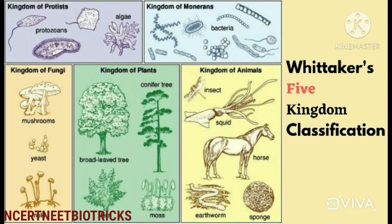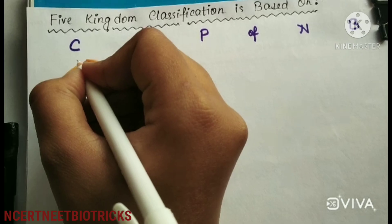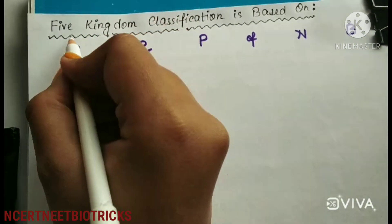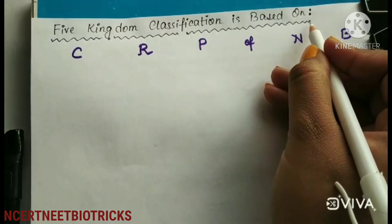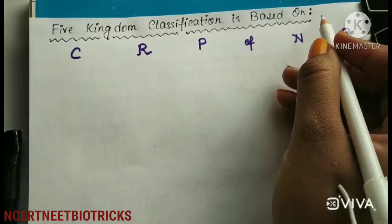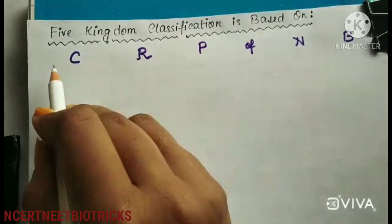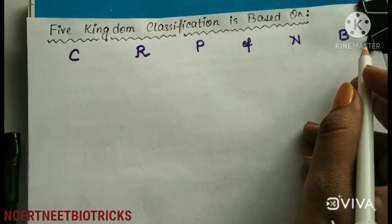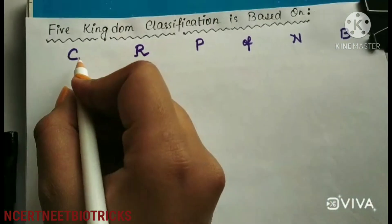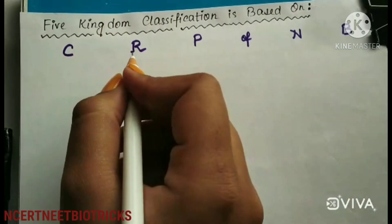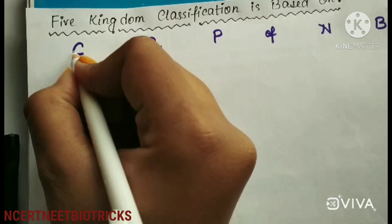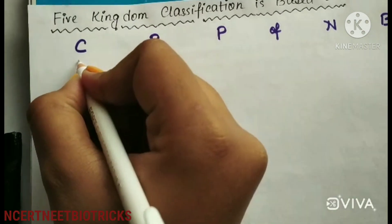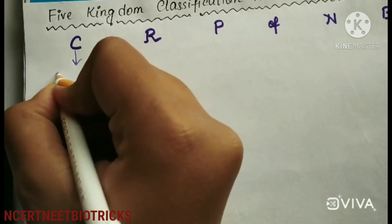The five groups are Monera, Protista, Fungi, Plantae and Animalia. Here we will see the tricks on the first 3 groups. The 5 kingdom classification is based on 5 characteristics, which we can remember as C, R, P, N, B.